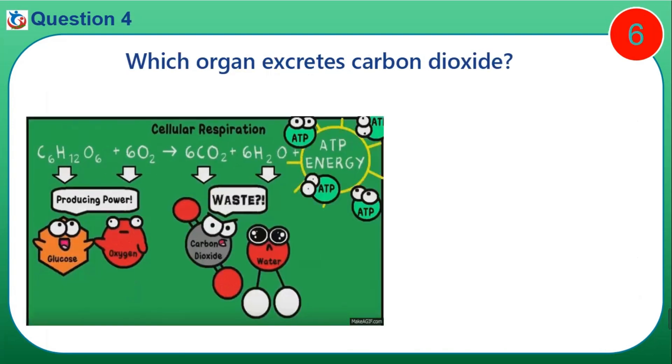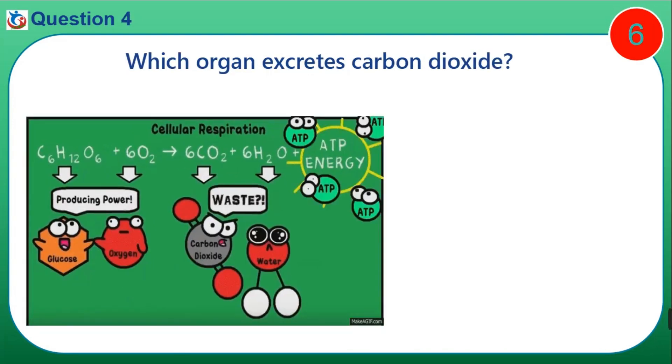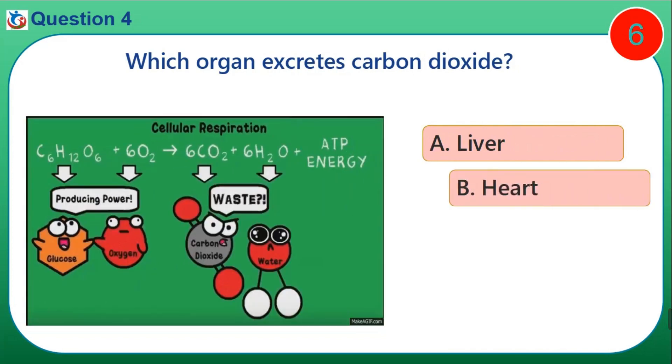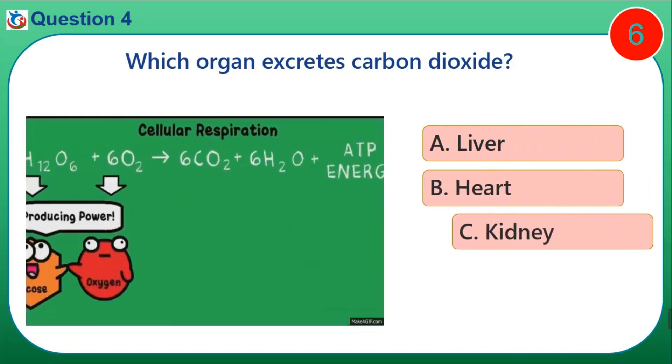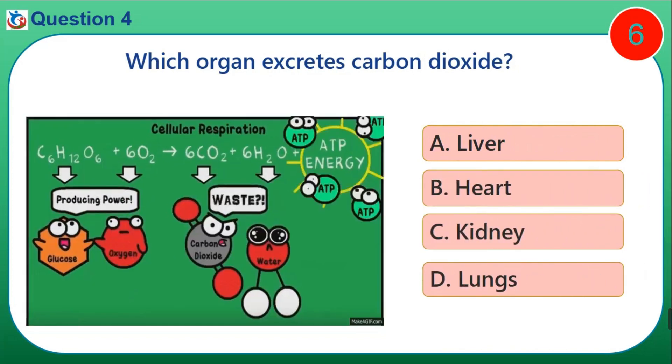Question 4. Which organ excretes carbon dioxide? A. Liver. B. Heart. C. Kidney. D. Lungs.